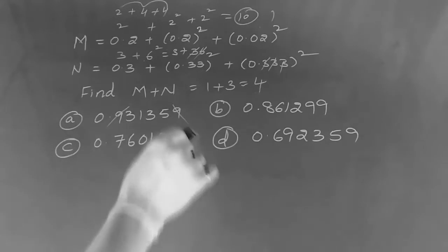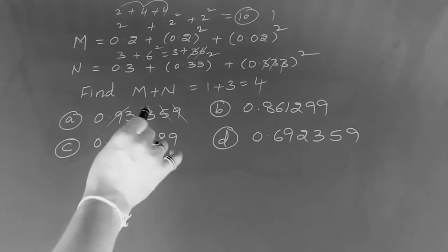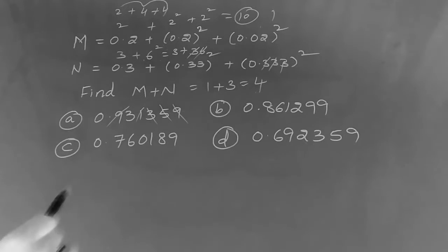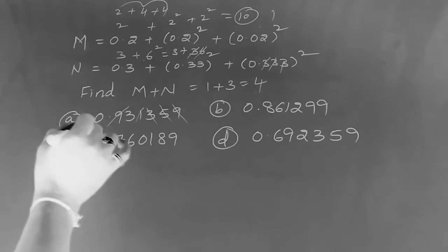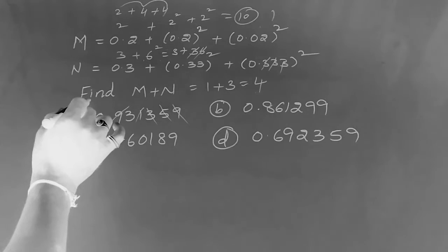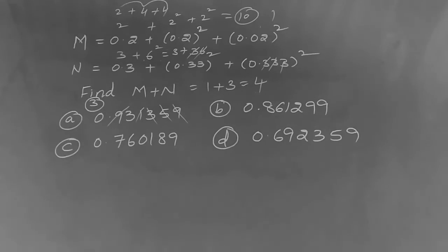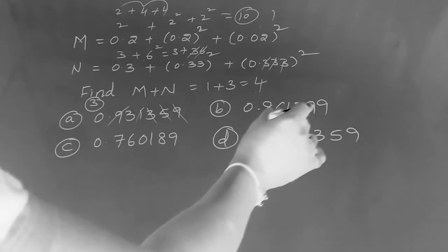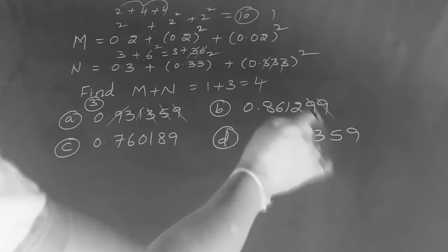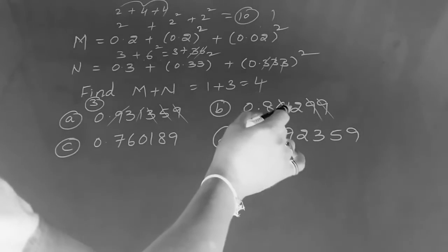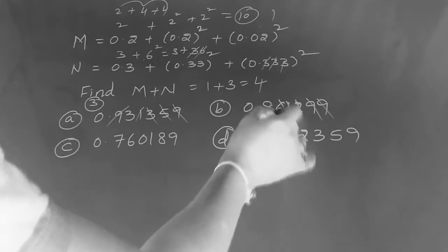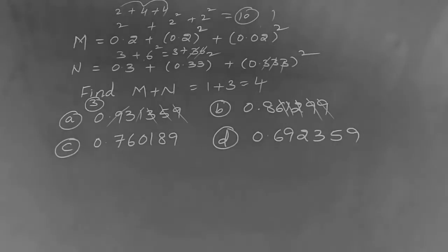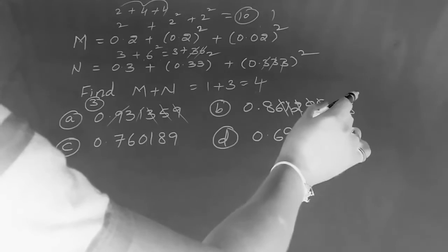9 — cut it. 5 plus 3 is 8. 8 plus 1 is 9, so cut it. The final digital sum is 3. Add 9, cut it. 6 plus 1 is 7. 7 plus 2 is nothing but 9, cut it. So digital sum is 8.